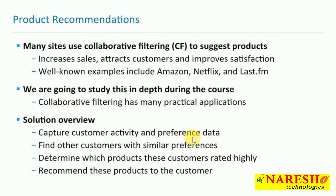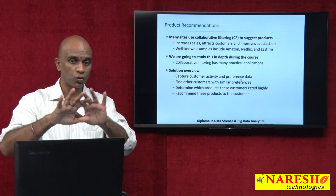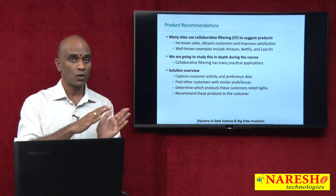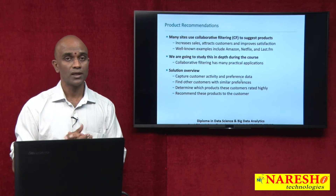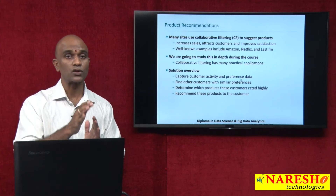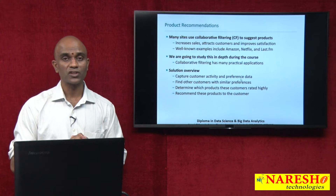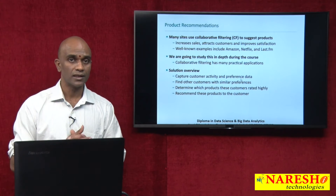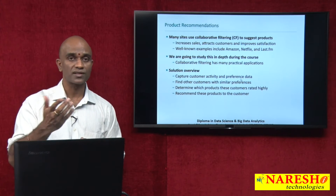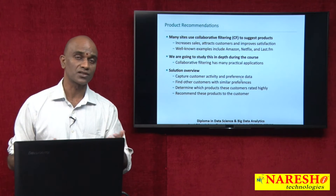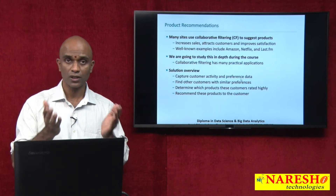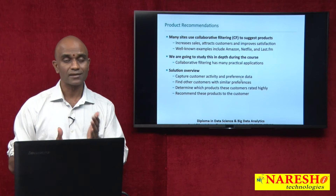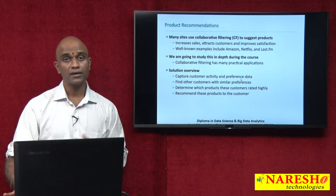Based on my preference data and customer activity, we can figure out who are the other customers who are like me. Whatever purchases I am making, those similar customers will also be shown similar recommendations because there is a good likelihood their characteristics match. We also use ratings that different customers provide on products to come up with recommendations for other customers — that is a quick example of product recommendation in the retail domain.